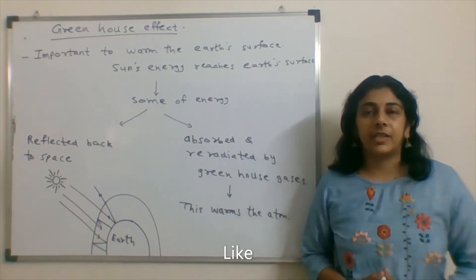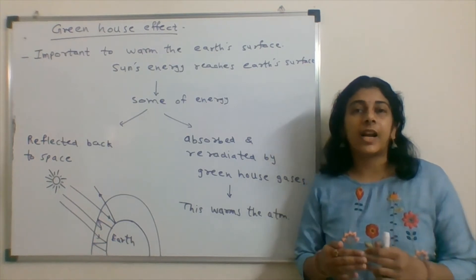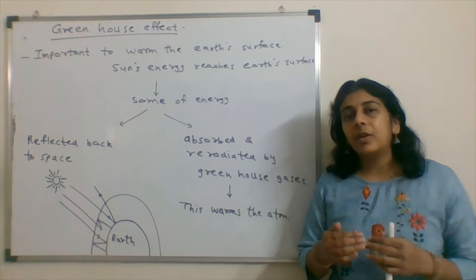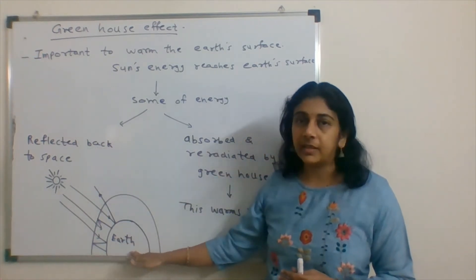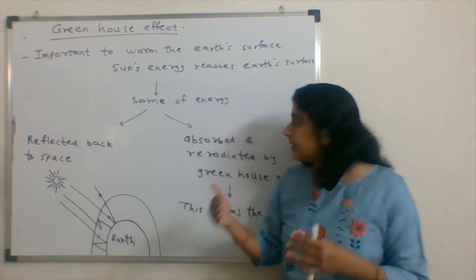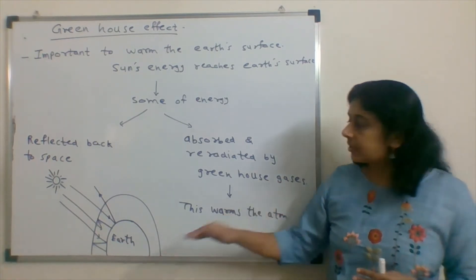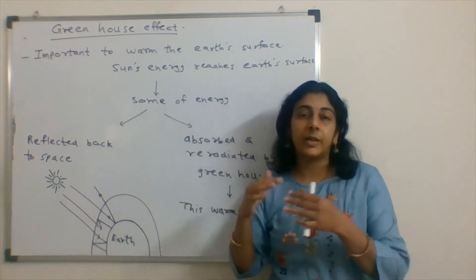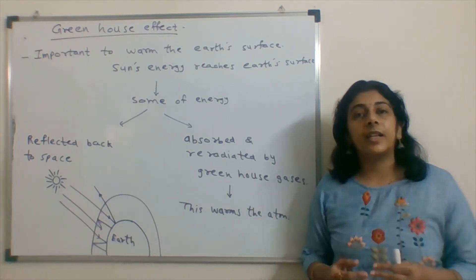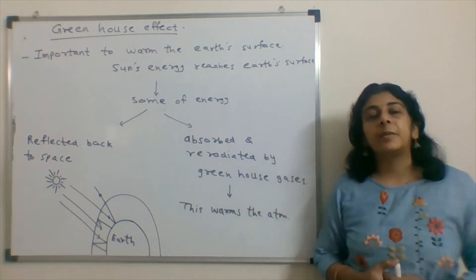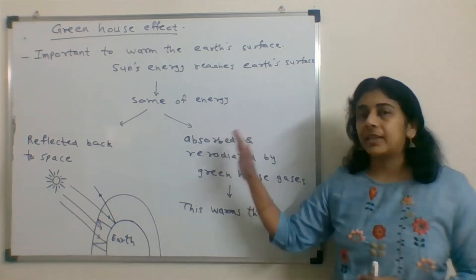First of all, let's learn about Greenhouse effect. During the Greenhouse effect, there is radiation of energy from the Sun. Some of the energy gets reflected back to space, and some get absorbed and re-radiated by the Greenhouse gases. This temperature becomes suitable for the living beings on the Earth. We call it Greenhouse effect.